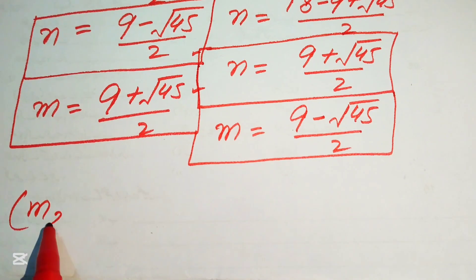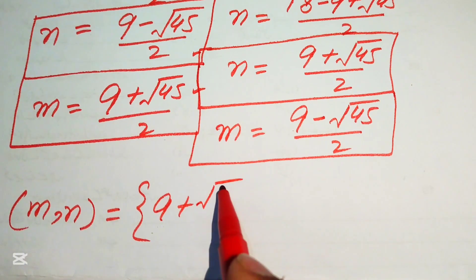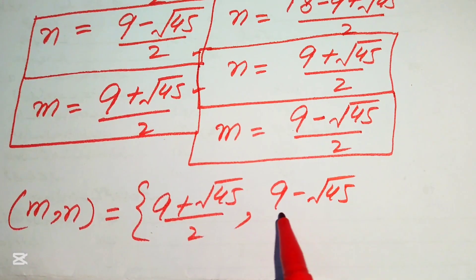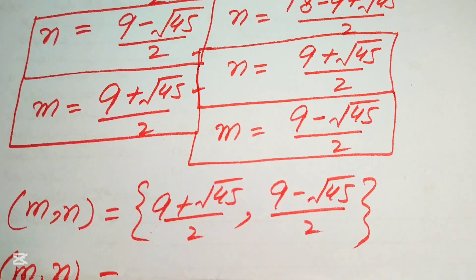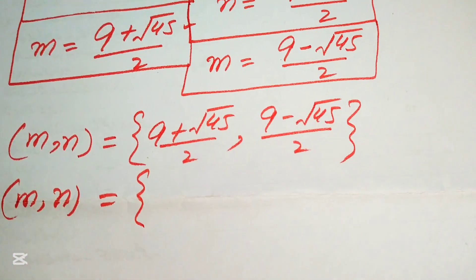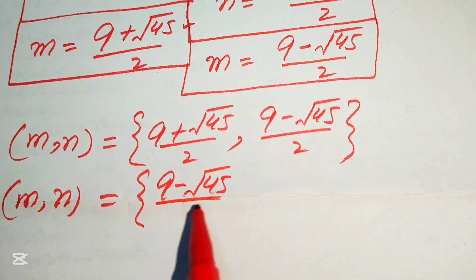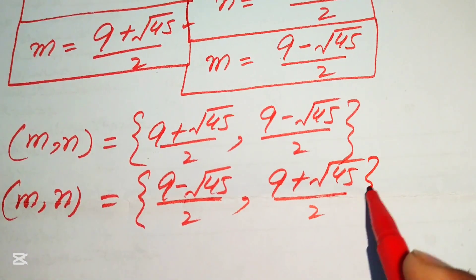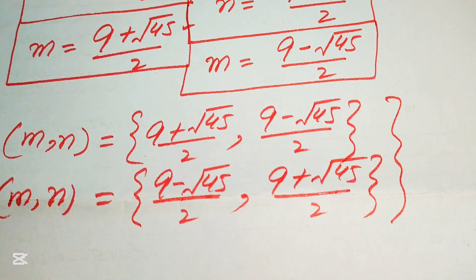Finally, we have two solutions. The first solution is (m, n) equals ((9 plus square root of 45)/2, (9 minus square root of 45)/2). The second solution is (m, n) equals ((9 minus square root of 45)/2, (9 plus square root of 45)/2). These are the two solutions of the given equation. Thank you for watching — please subscribe for more videos.